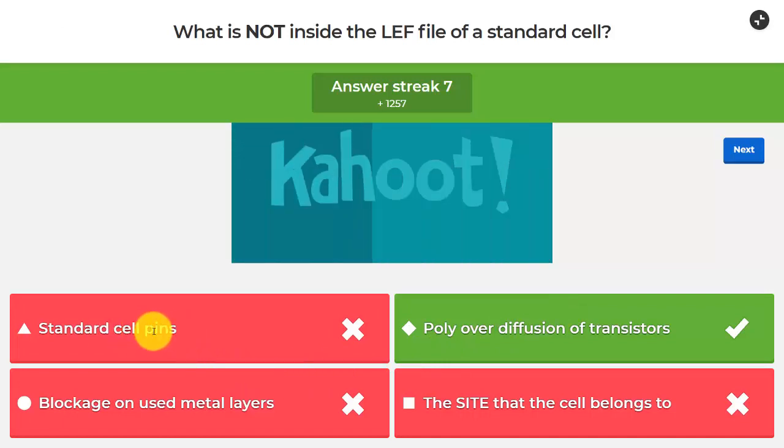So it does have the standard cell pins, it has the blockage on the used metal layers, the site definition. Remember the site is the minimum height and width, where all of the cells will be the same height, because that's the row height. And poly over diffusion of the transistors is something that we do not have, that's something we abstract away in our LEF.